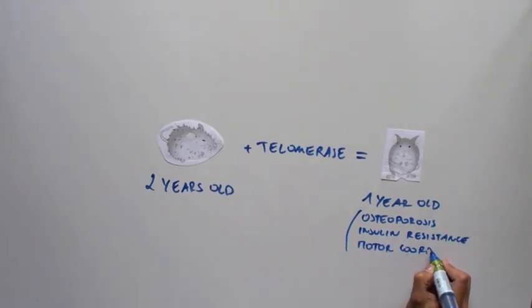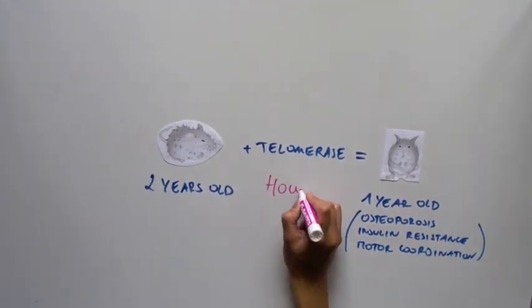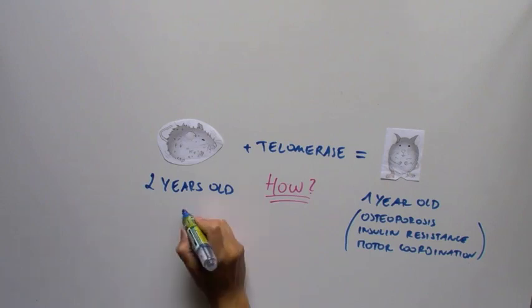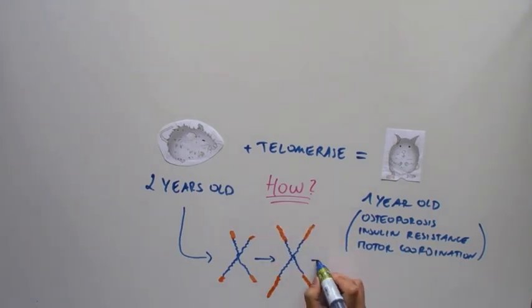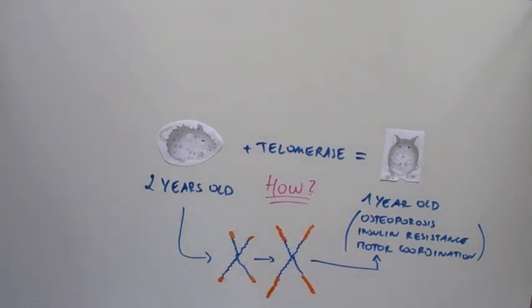To figure out how telomerase was doing this, the scientists wanted to make sure that telomerase treatment was extending the length of the chromosomes. In fact, they found that adding telomerase prevented chromosomes from getting short over time, and that this was the reason for the increased lifespan and increased health of these mice with added telomerase.